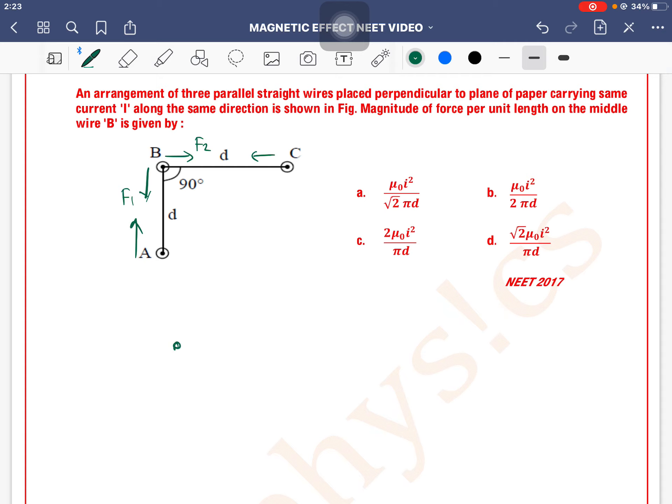So here on wire B, there are two forces, one is F1 and one is F2. How much is the angle? 90 degrees. F1's value is how much? Force per unit length, this is L. So this will come μ₀I₁I₂ divided by 2πD. This means I² divided by 2πD.